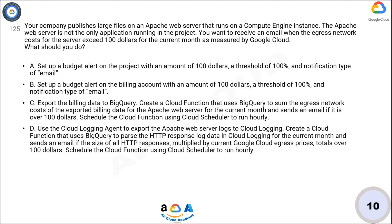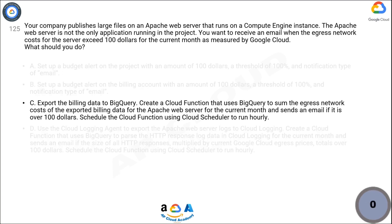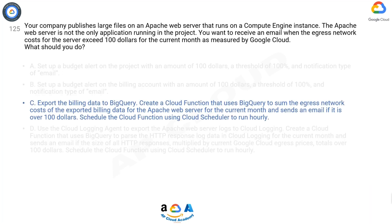Now take 10 seconds to think about the answer. The correct answer is C. By choosing option C, you leverage the flexibility and analytical capabilities of BigQuery to analyze the exported billing data and calculate the egress network costs specifically for the Apache web server.